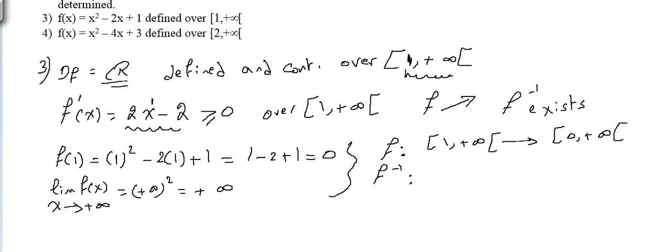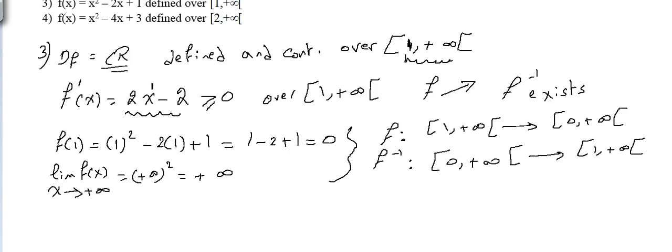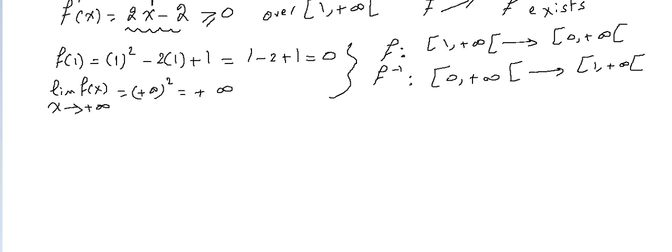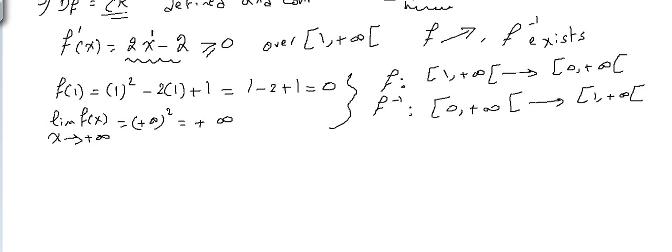Therefore f⁻¹ has domain [0, +∞) and range [1, +∞). Note: when f is strictly decreasing, the domain of f⁻¹ is reversed — it goes from f(b) to f(a) rather than f(a) to f(b). We'll see that in a later example.